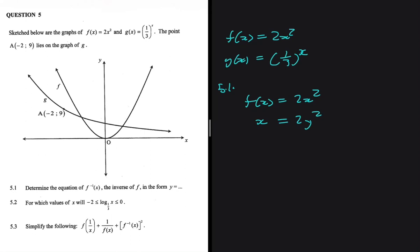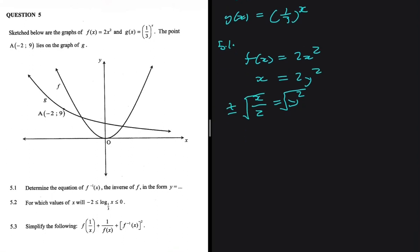Let's go ahead and do that. I divide both sides by 2, giving x/2 equals y squared. Then I take the square root of both sides, giving y equals plus or minus the square root of x divided by 2. We need a restriction here: x must be greater than or equal to zero for this equation to hold. Just like that, we've answered 5.1.